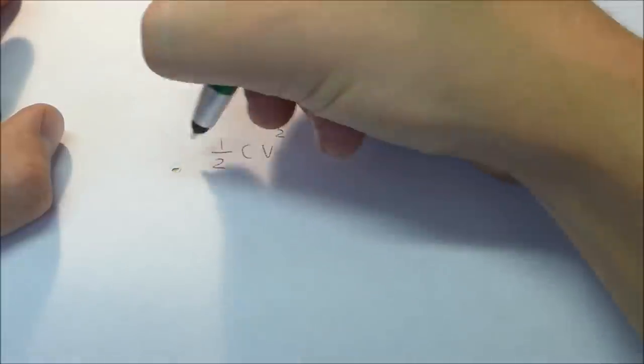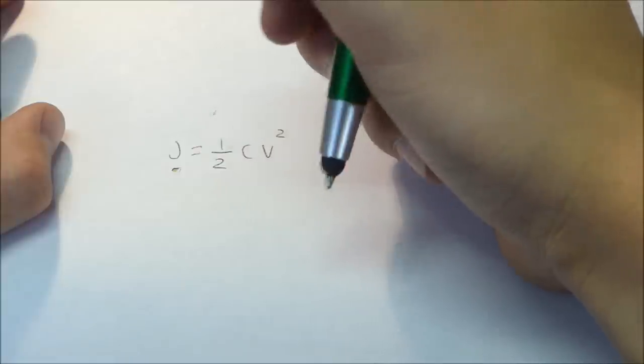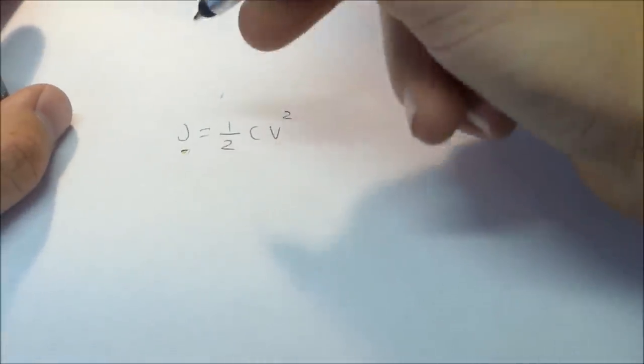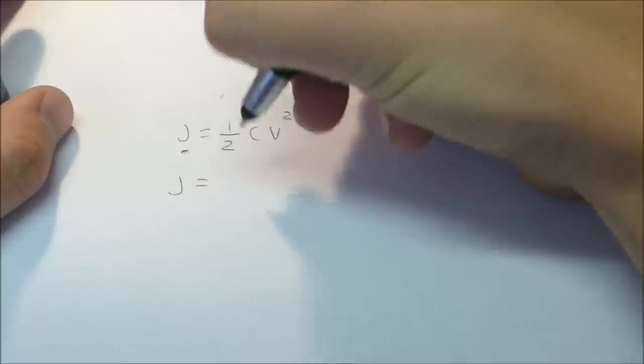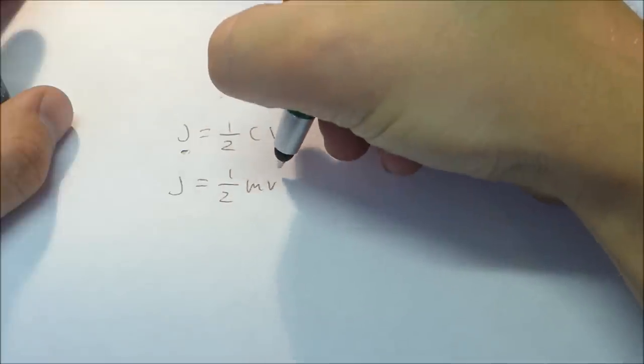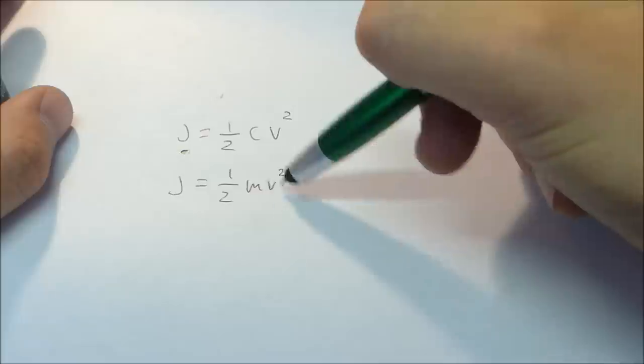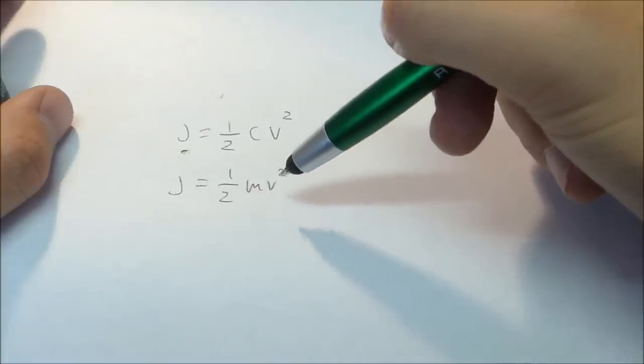This formula for finding the energy in joules of a capacitor is similar to the formula for finding energy from a moving object. In physics, a moving object has the energy where joules equals one-half mv squared. This means that m is mass in grams and v is velocity in meters per second.